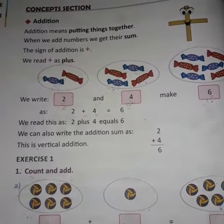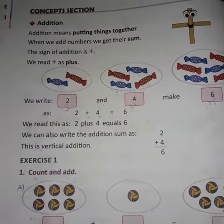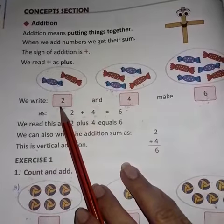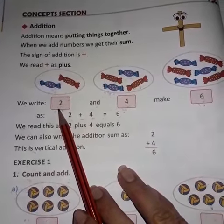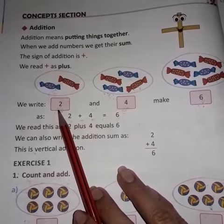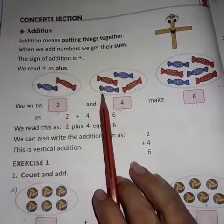How many toffees are there? Let's count. One, two. There are two toffees, isn't it? So you have to write two in this box.